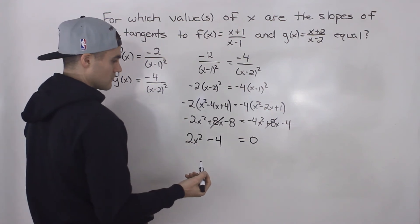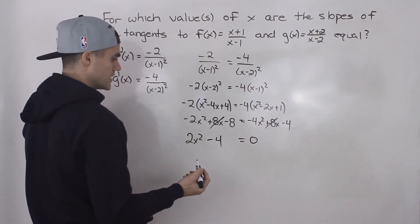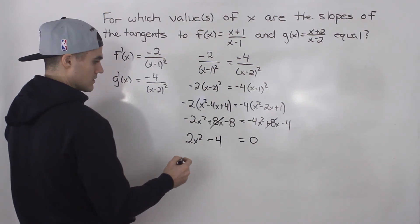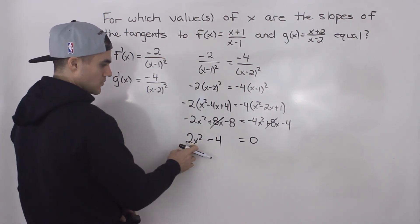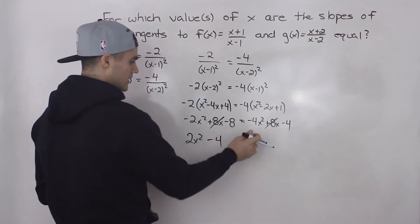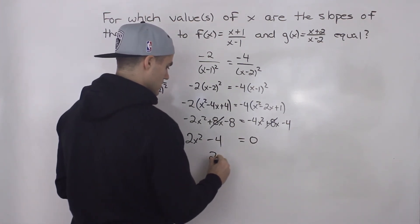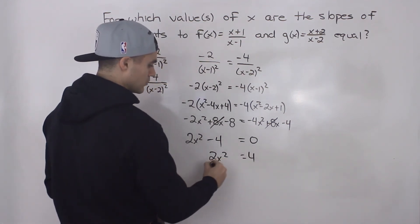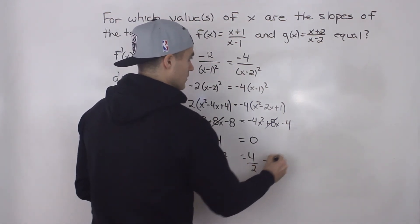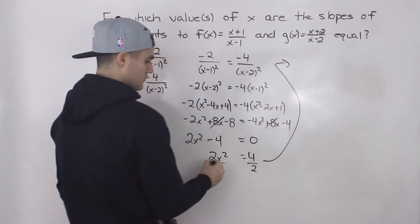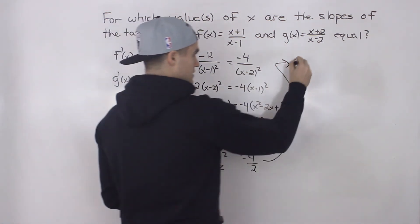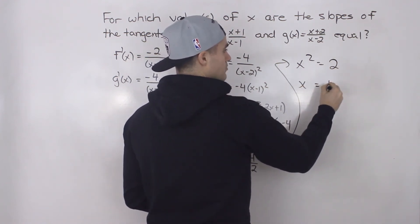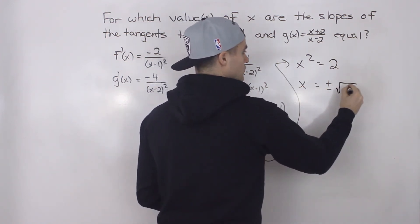Solving 2x squared minus 4 equals 0 is straightforward since there's only an x squared term — no need to factor. Bring the negative 4 over to get 2x squared equals 4, then divide both sides by 2, giving x squared equals 2.